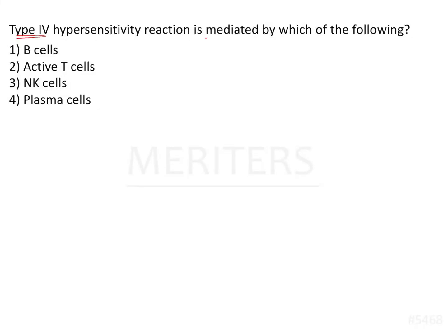Type 4 hypersensitivity reaction is mediated by which of the following cells? To answer this, we should know the different types of hypersensitivity reactions and some important features about the types. Hypersensitivity is nothing but an exaggerated or abnormal immune response which is harmful to the host. There are four different types of hypersensitivity, and this classification is given as per Gell and Coombs.